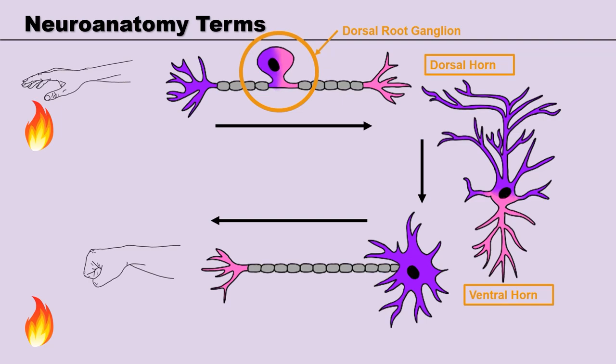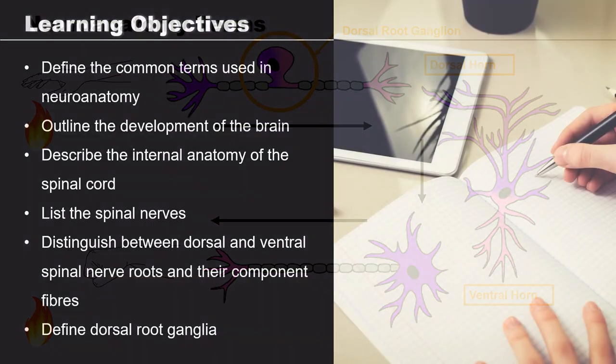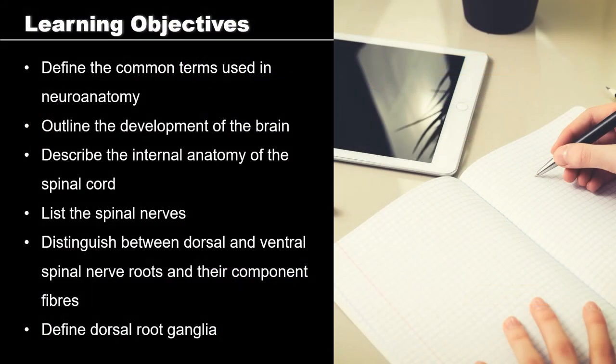And that brings us to the end of this lecture. We have covered the common neuroanatomical terminology and the development of the brain. We have also taken a more detailed look at the anatomy of the spinal cord and the pathways associated with a reflex arc.